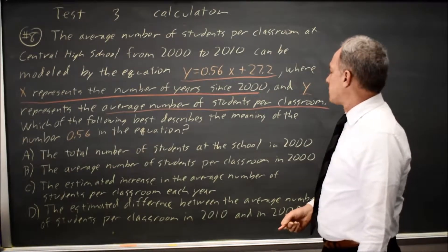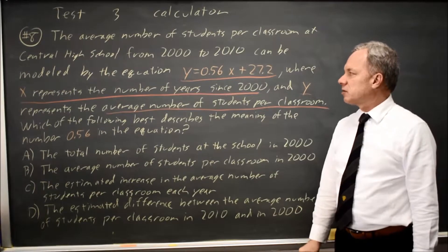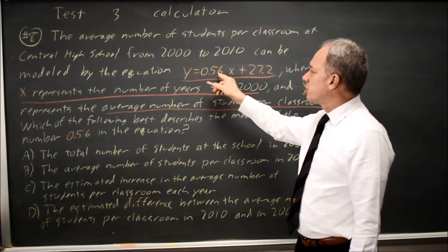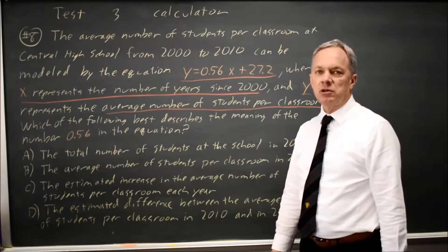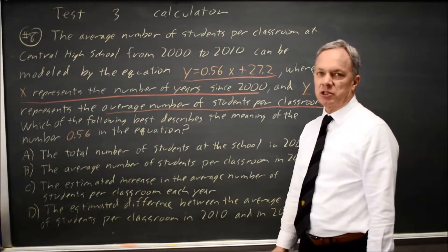And they're asking which best describes the meaning of the number 0.56 in the equation. In this equation, y equals 0.56x plus 27.2, the slope is 0.56, and the intercept is 27.2.